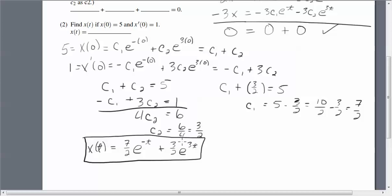In fact, it will satisfy the initial value problem. You can check that by plugging in 0 for t, and remember that e^0 is simply 1. So 7/2 plus 3/2 is 10/2, which is 5. So that, in fact, satisfies this initial value.